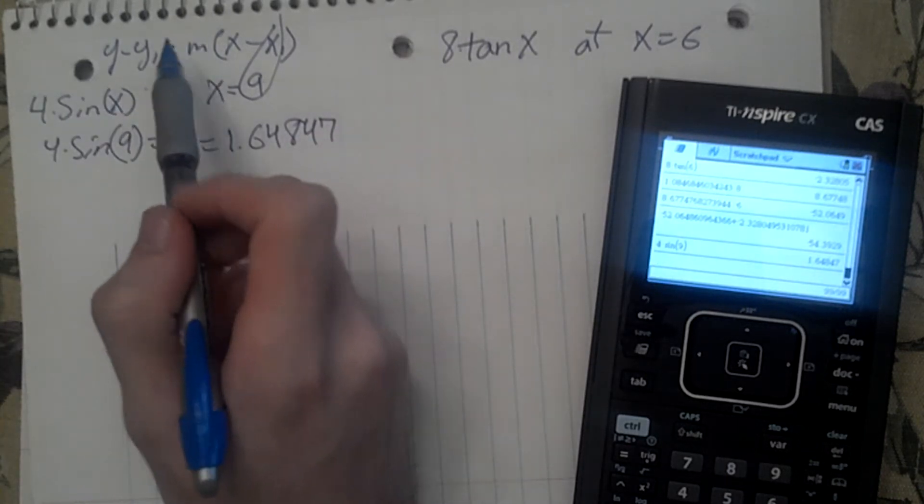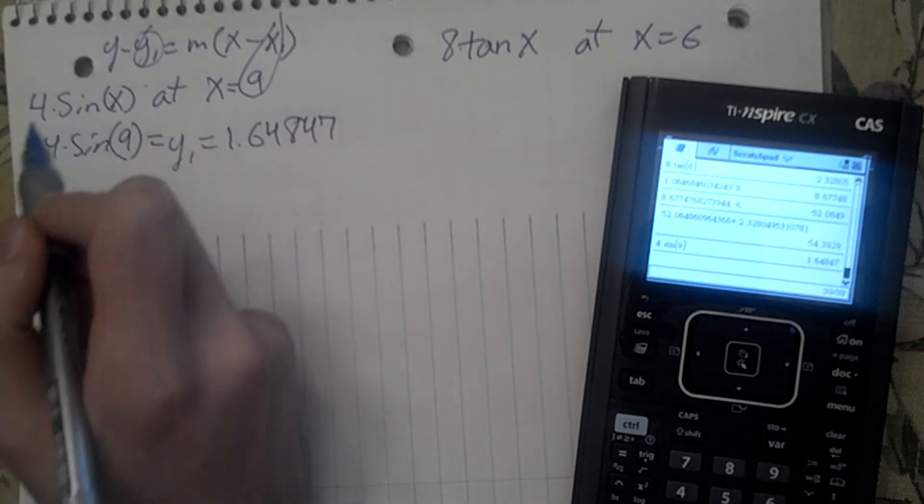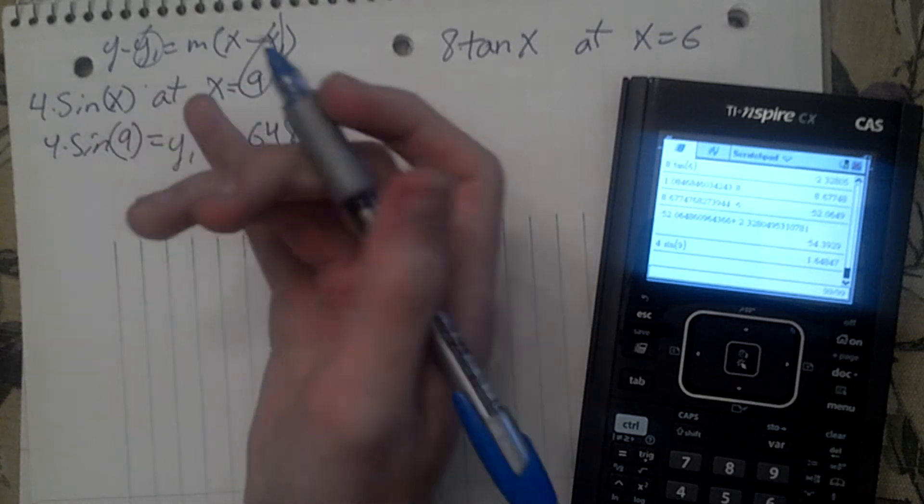This gives 1.64847. Now, to find the m, since we've already got y1, we have to take the derivative of this, and the derivative of sine is cosine.